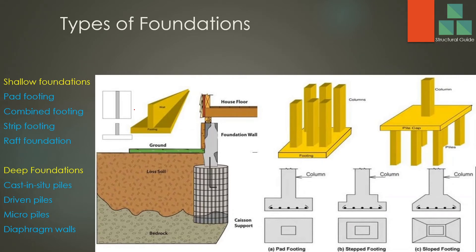Let's discuss briefly on the types of foundations. Mainly there are two types: shallow foundations and deep foundations. Shallow foundations are constructed at a shallower depth and do not go to deeper levels. Pad footings, strip footings, and combined footings are considered shallow foundations. Raft foundations are also a kind of shallow foundation, where all the columns are supported on one flat plate. For deep foundations, there are cast in-situ piles, driven piles, micro piles, and diaphragm walls. Those foundations mostly go down to the bedrock level.